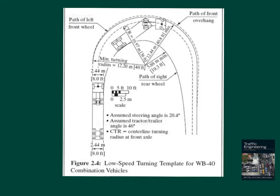Here's the low speed turning template for the intermediate semi-trailer known as WB40. The template is a resource for identifying the tightest turn that this particular vehicle can manage. The minimum radius for the left front wheel is 40 feet. The range for this design value begins at 24 feet for a passenger car and goes up to 60 feet for the double tractor-trailer combination vehicle. The template shows how the rear wheels of the semi-trailer follow a different path than the front wheels — the path of the rear wheels is not circular and has a variable turning radius no smaller than 19.3 feet.